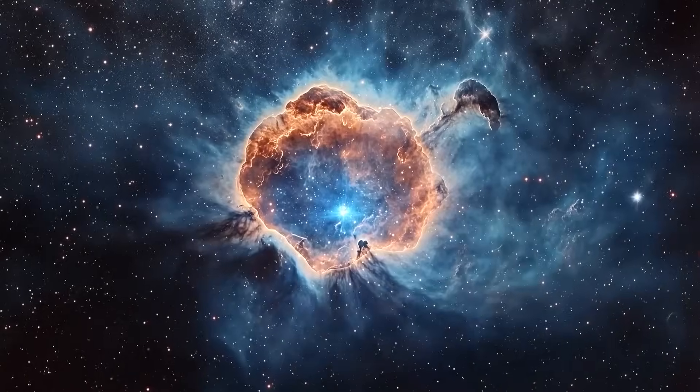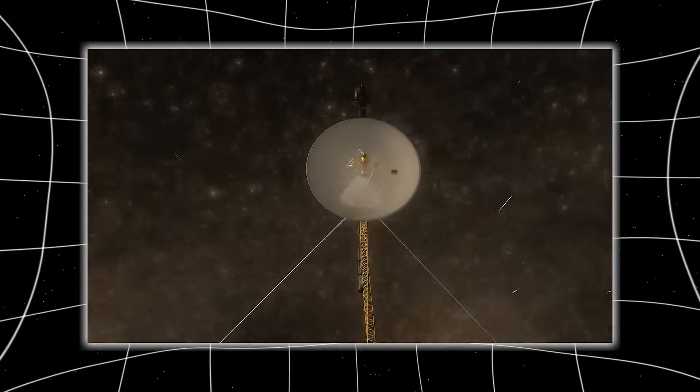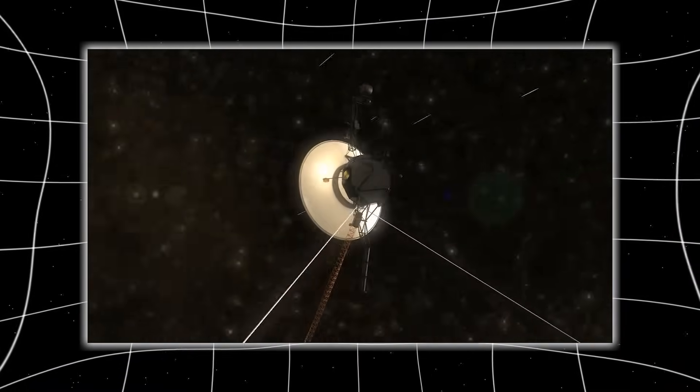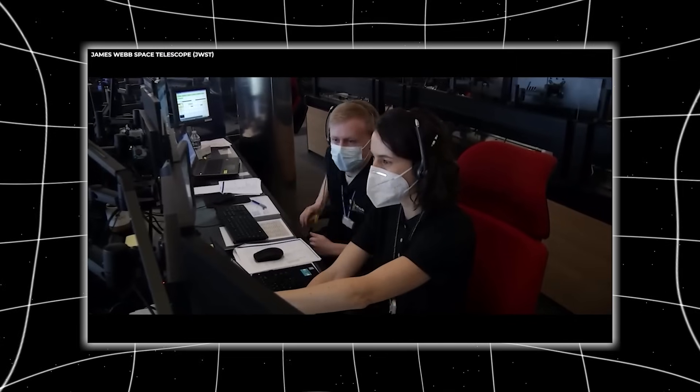But one internal memo, leaked by an anonymous whistleblower, offered a more chilling reason. Subject has requested immediate relocation to underground facility Site 7. Claims to have received the call from Signal Fragment C.